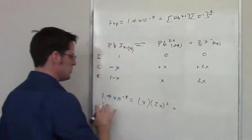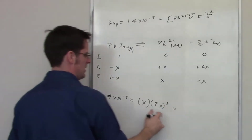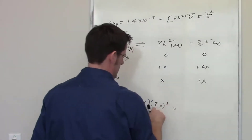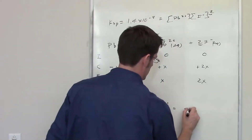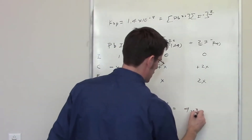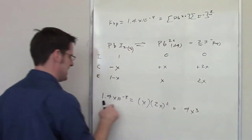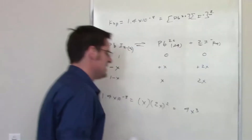Working through the algebra, (2x)² times x gives 4x³, which equals 1.4 times 10 to the negative 8.